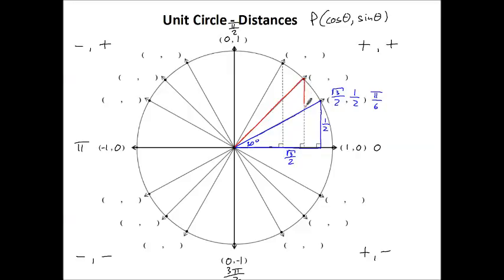Now let's look at our other special right triangle — the 45-45-90 right triangle — which means our angle is 45 degrees, equivalent to π/4 in radians. In this triangle, both legs have a length of √2/2. That means our x-coordinate, which is equivalent to our cosine, is √2/2, and our y-coordinate, which is the sine, is also √2/2.